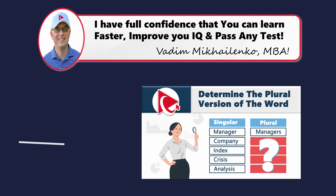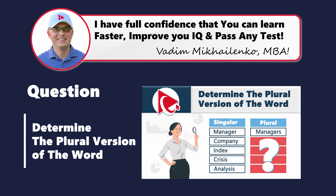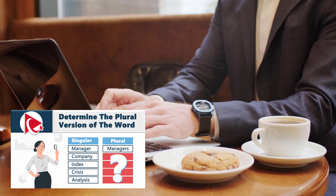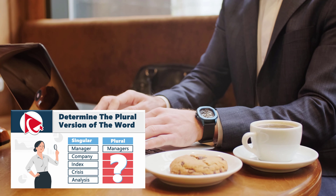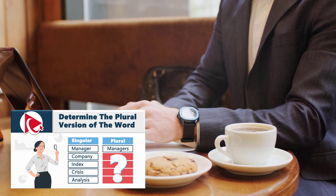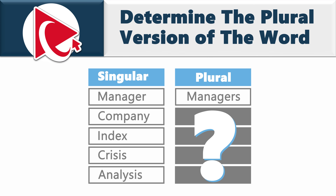Trying to answer this question is like convincing a cookie to share chocolate chips — it's a tough cookie, but the reward is sweet. Maybe this tough question is a stepping stone toward mastery and understanding, which is rather a sweet reward. We are presented with the challenge where we need to build singular-plural business word pairs.